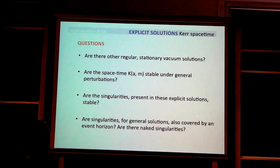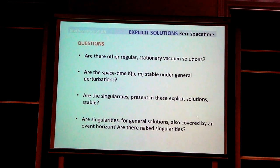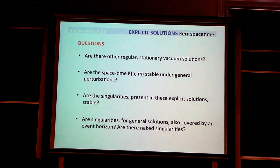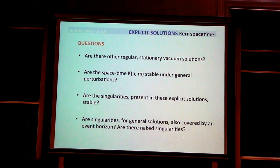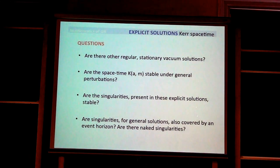Third: are the singularities present in the Schwarzschild and Kerr solutions stable under perturbations? It could be that they are artifacts of the symmetry. Fourth: are naked singularities covered by the horizon for general solutions? This is the cosmic censorship conjecture. Fifth: what are the quantitative properties of singularities for general solutions?